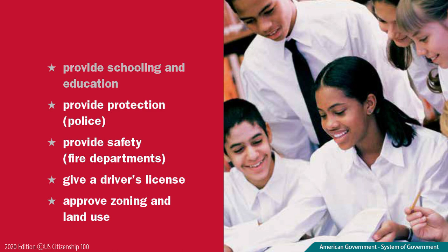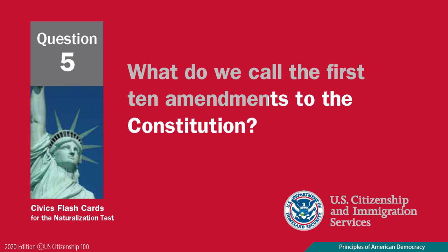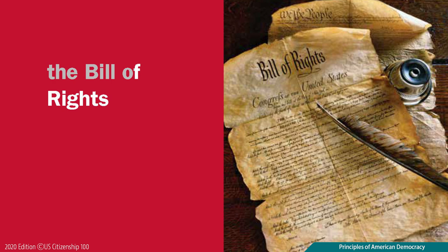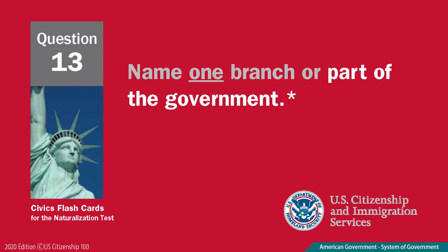What do we call the first ten amendments to the Constitution? The Bill of Rights. Name one branch or part of the government. Congress.